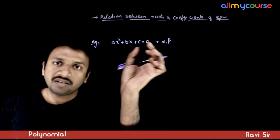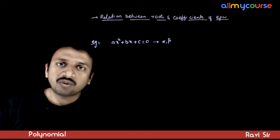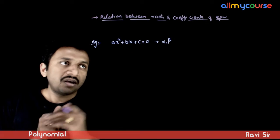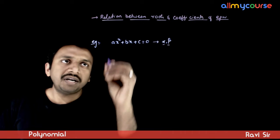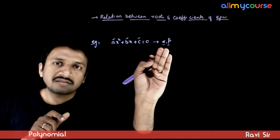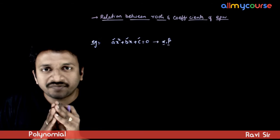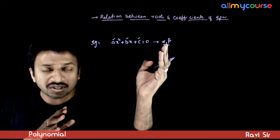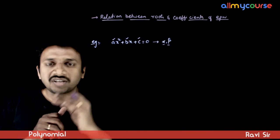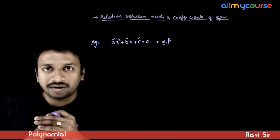ax squared plus bx plus c equals zero is a quadratic equation, and let alpha and beta be the roots. The question is: how do we relate alpha and beta with the coefficients a, b, c? Obviously, the roots alpha and beta depend in some way on a, b, c, and if you have roots alpha and beta, they in some way determine the coefficients a, b, c. So what is the relation between these two quantities?